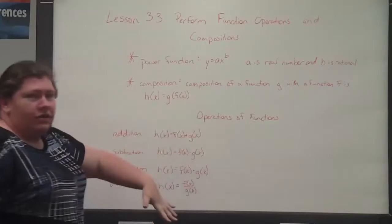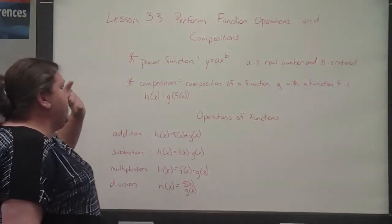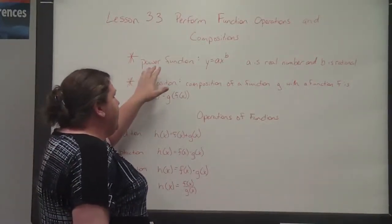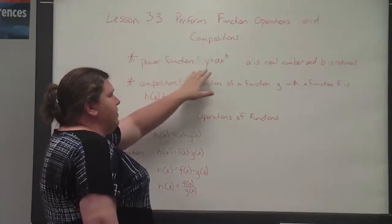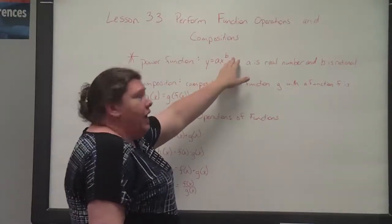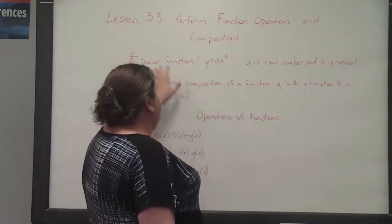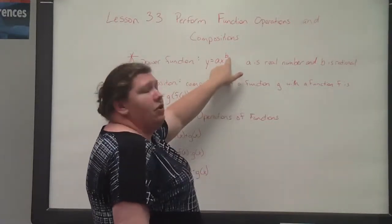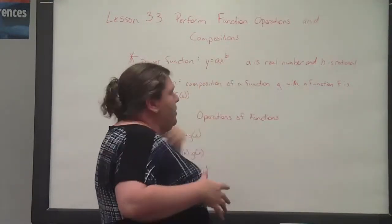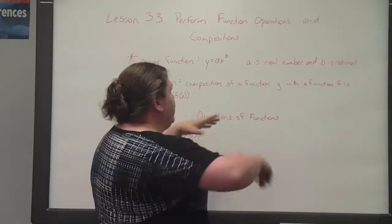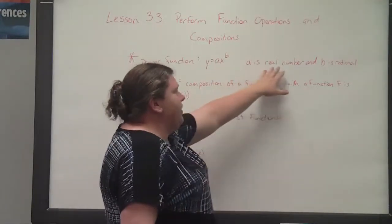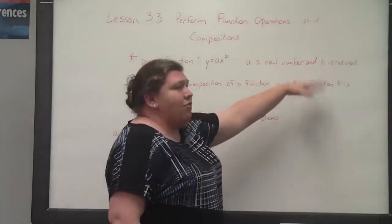We'll start with vocabulary. A power function is in the form of y equals a times x to the b power. It is called a power function because of the exponent b, which is the power in your equation. This applies when a is a real number and b is a rational number.